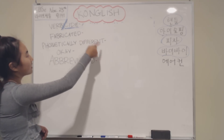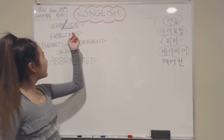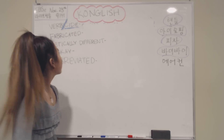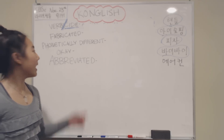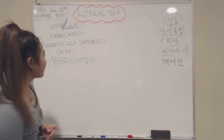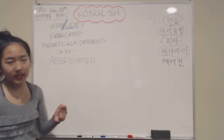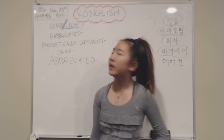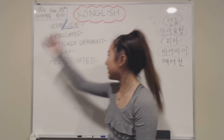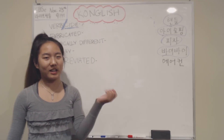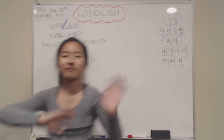And yeah, those are my five types of Konglish: verbicide, fabricated, phonetically different, ones that are okay, and abbreviated. Just in case you forgot, check out the EBS-E event on November 25th at 9pm on your PC or computer. That was my lesson accomplished — remember not to use any of these; you're allowed to use bye-bye because that actually makes sense, but nothing else. So thank you for listening, remember to like this video and subscribe to my channel. Bye-bye!